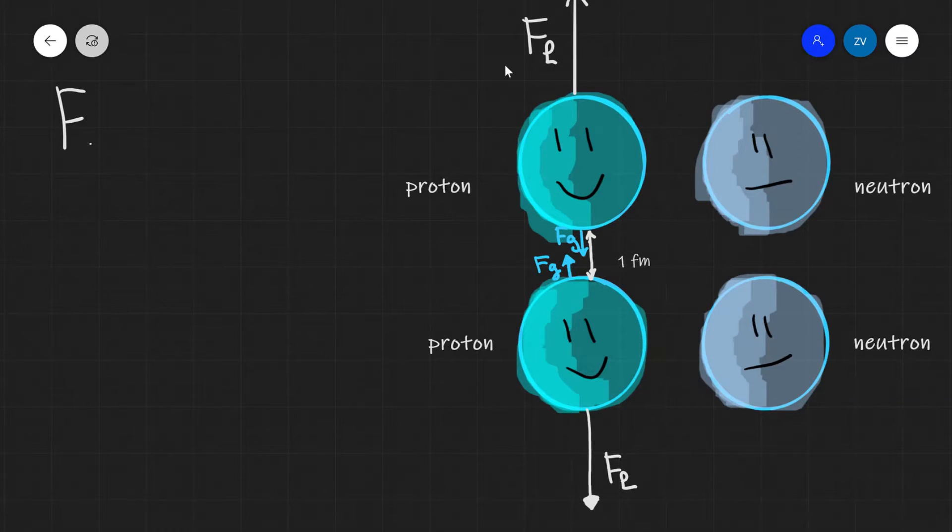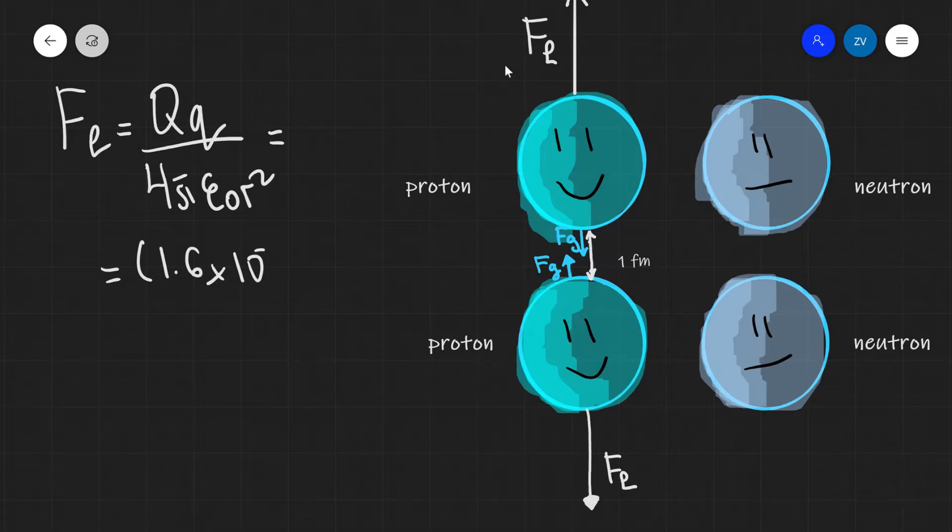Remember, the electrostatic repulsion is given by the product of the two charges, Q times Q, divided by 4 pi epsilon naught R squared. The product of the two charges will just be equal to 1.6 times 10 to the power of minus 19 squared, because both of the protons are going to have exactly the same charge. We're going to be dividing this by 4 pi, and then multiplying by epsilon naught, which is 8.85 times 10 to the power of minus 12, multiplied by R squared.